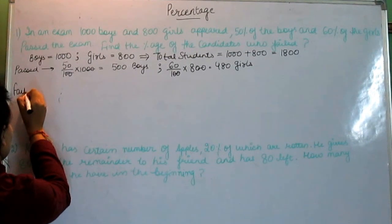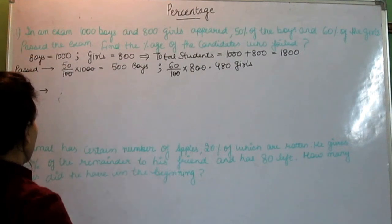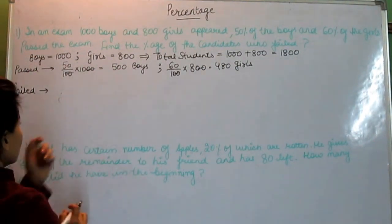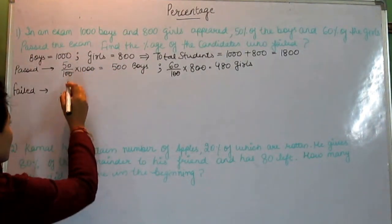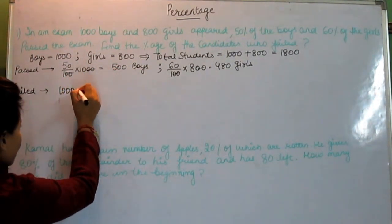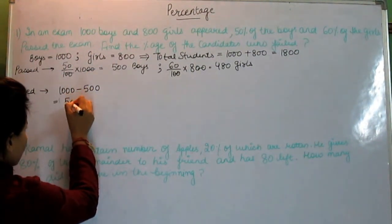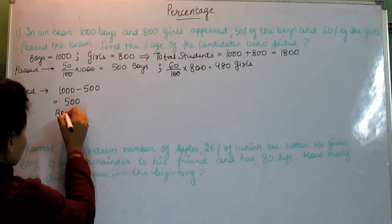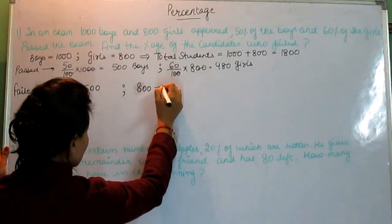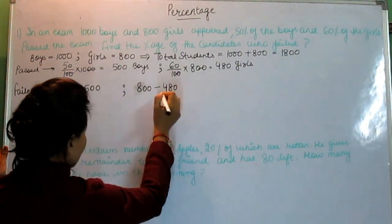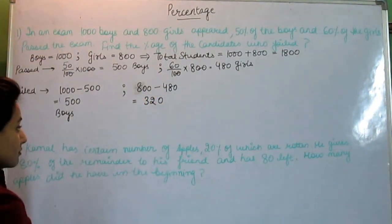We have to get the percentage of the students who have failed. So if 500 boys are passed out of 1000, failed boys are 500. Out of 800, 480 girls are passed, so 320 are failed.